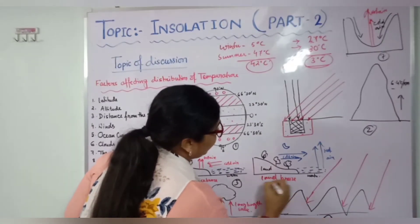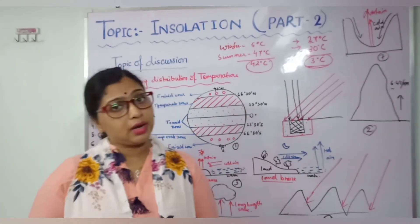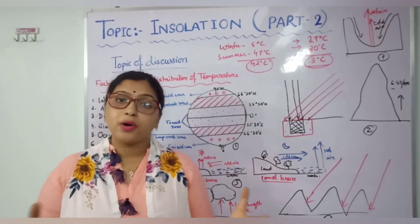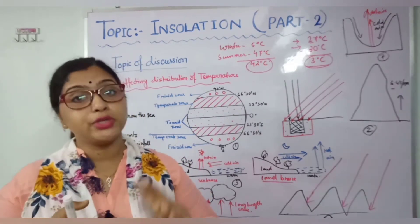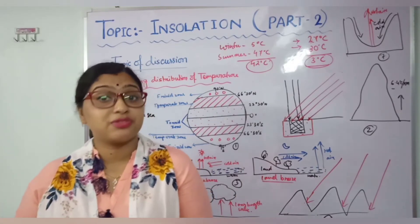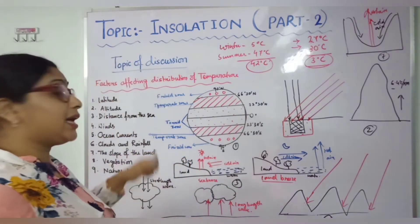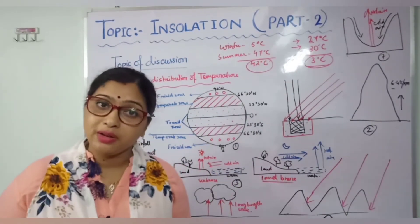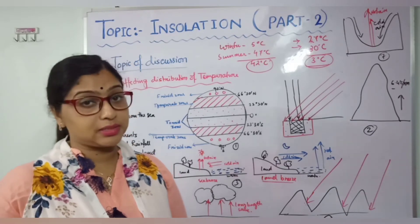So by this land and sea breeze, areas near coastal regions and water bodies will have a moderate climate. Now, winds. We all know that in this world, some places have local winds. Local wind names include fohn, siroco, loo, kalbaisakhi, mistral, and others — cold winds and warm winds — which influence that area's temperature. If cold wind is blowing over an area, the area's temperature will decrease. If warm wind is blowing, the area's temperature will rise.